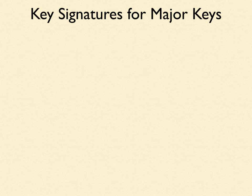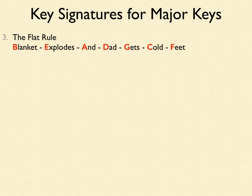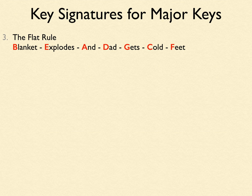Now what do we do for major keys and scales that use flats? There's a different rule for that — the flat rule. The flat rule is the sharp rule in reverse: B, E, A, D, G, C, F. I've used the sentence "Blanket Explodes And Dad Gets Cold Feet," but you can use any words you like, just as long as they use those letters in that order. Some students use "Birds Eat And Down Goes Cat Fast" or anything they can think of.